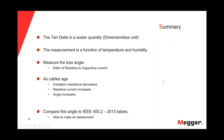The Tan Delta is a scalar quantity and dimensionless unit. The measurement is a function of temperature and humidity. It is the measure of the loss angle — the ratio of resistive and capacitive current. As cables age, the insulation resistance decreases, the resistive current increases, and the angle increases. Compare this angle to the IEEE 400.2 2013 tables and you are able to make the proper assessment.